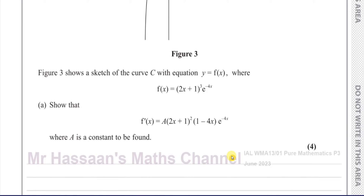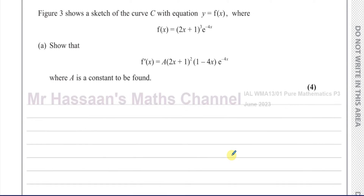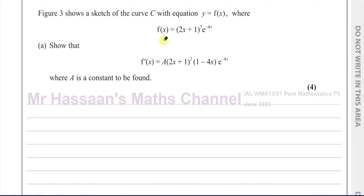First of all, they've asked us to show that f dash of x is equal to a times 2x plus 1 squared times 1 minus 4x times e to the power of minus 4x. So this is a question where we have to differentiate. A lot of people misread this and think they're asking for the inverse function. This is not the inverse function — this is the first differential, the gradient function. To get from f to f dash of x, we have to differentiate this function.